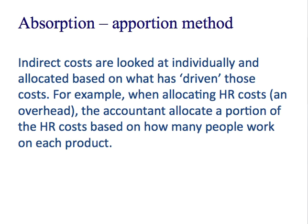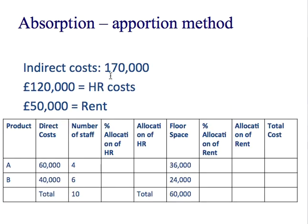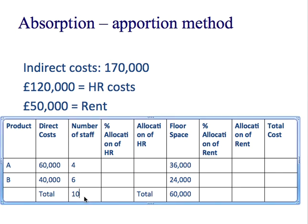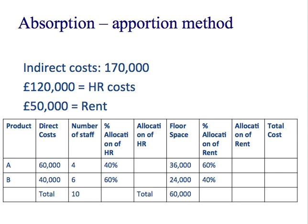However, the apportion method is a little bit different. We look at the costs individually and try to work out what's really driven these costs, then find a basis for allocating them. So we've got indirect costs of £170,000 again. Breaking that down: £120,000 were HR costs and £50,000 were rent. We've got two products with direct costs of 60 and 40, four members of staff working in product A and six in product B, and different amounts of floor space. The total number of staff is 10, so product A is taking up 40% of the HR cost allocation and product B is 60%.